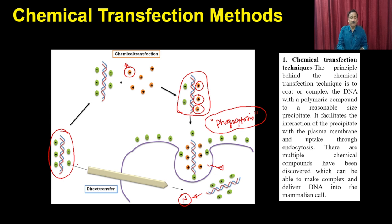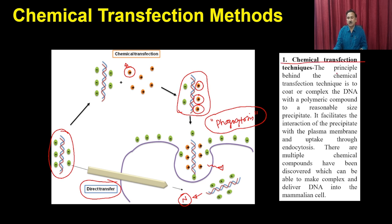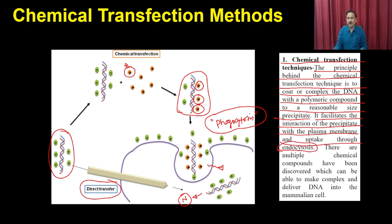The DNA covered in these chemical molecules is taken up by the cell through phagocytosis. Once it gets entered into the cell, the positively charged molecules release the DNA, which then goes to the nucleus and participates in recombination or directly in transcription and translation. Apart from that, you can also do direct transfer of DNA into the cell with methods like the ballistic method or gene gun method, which can also be used for mammalian cells.